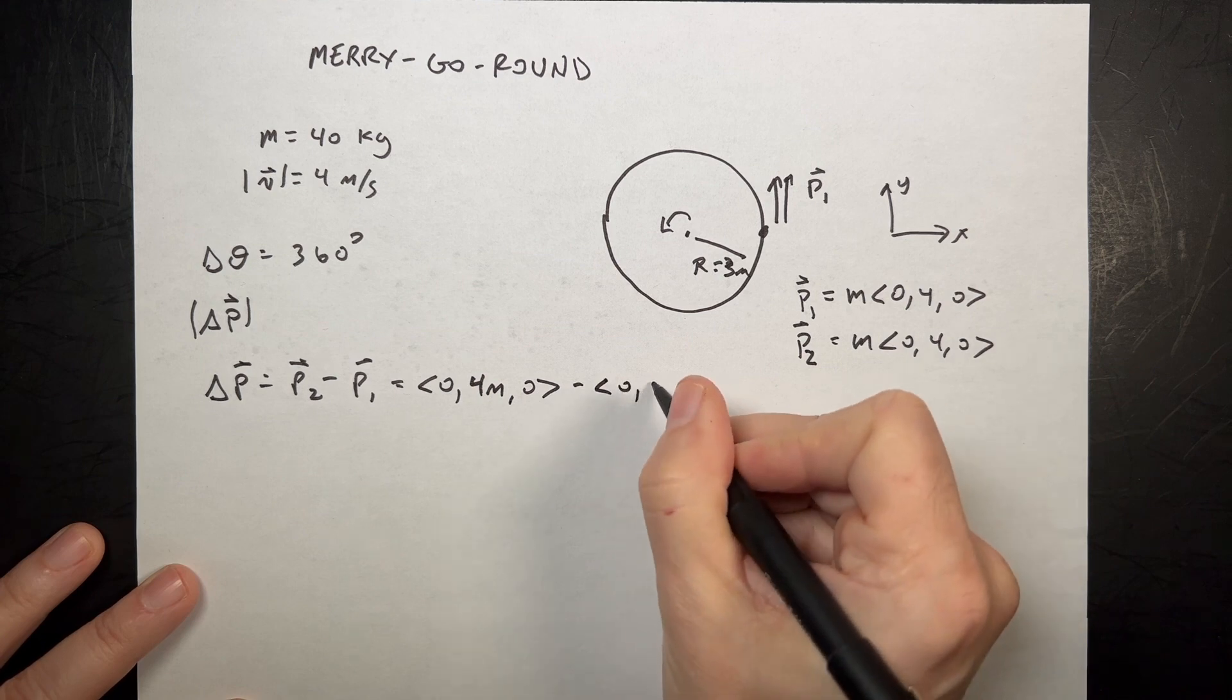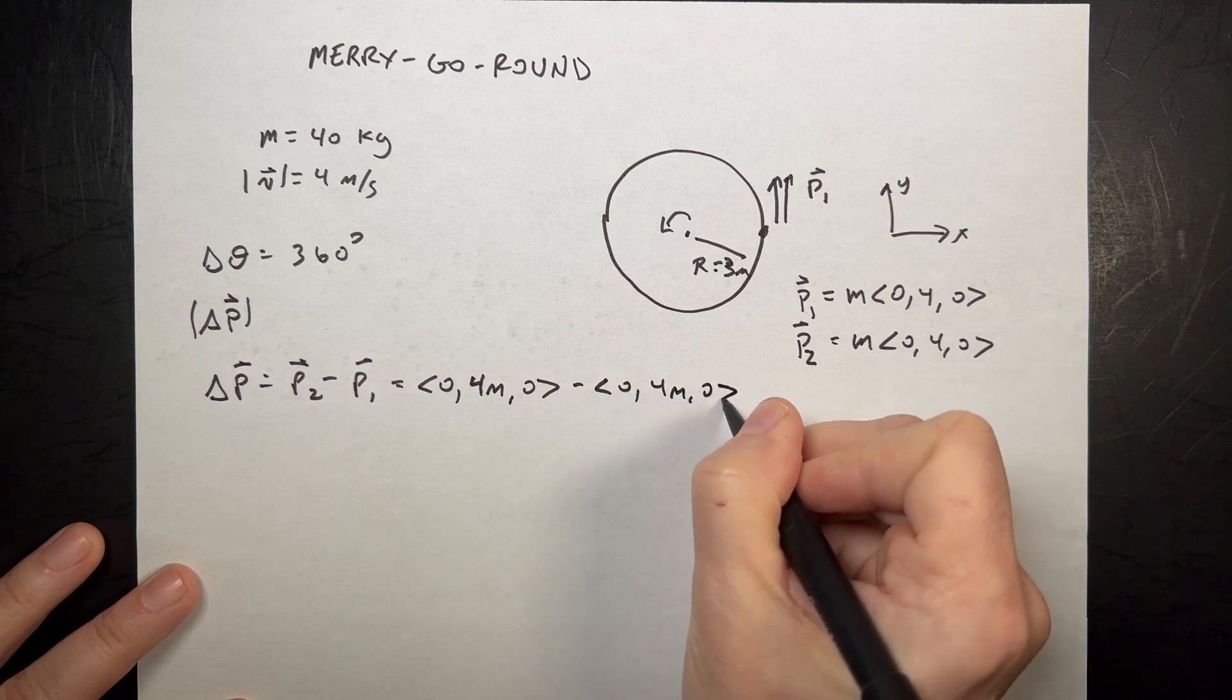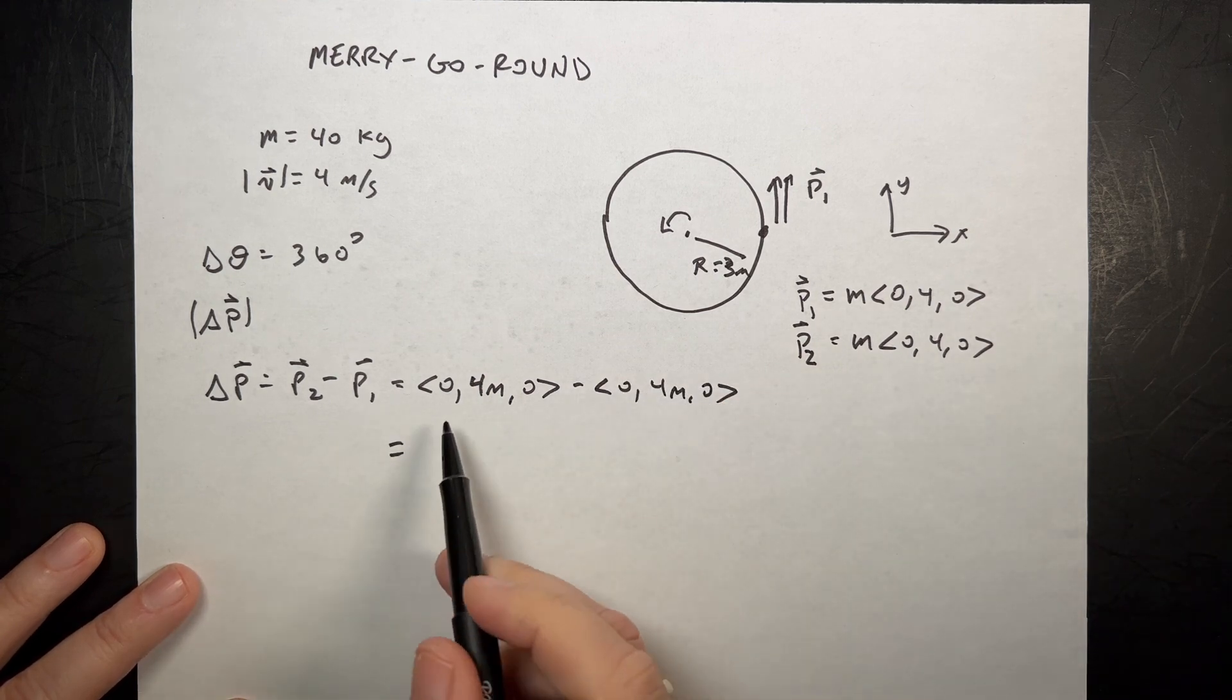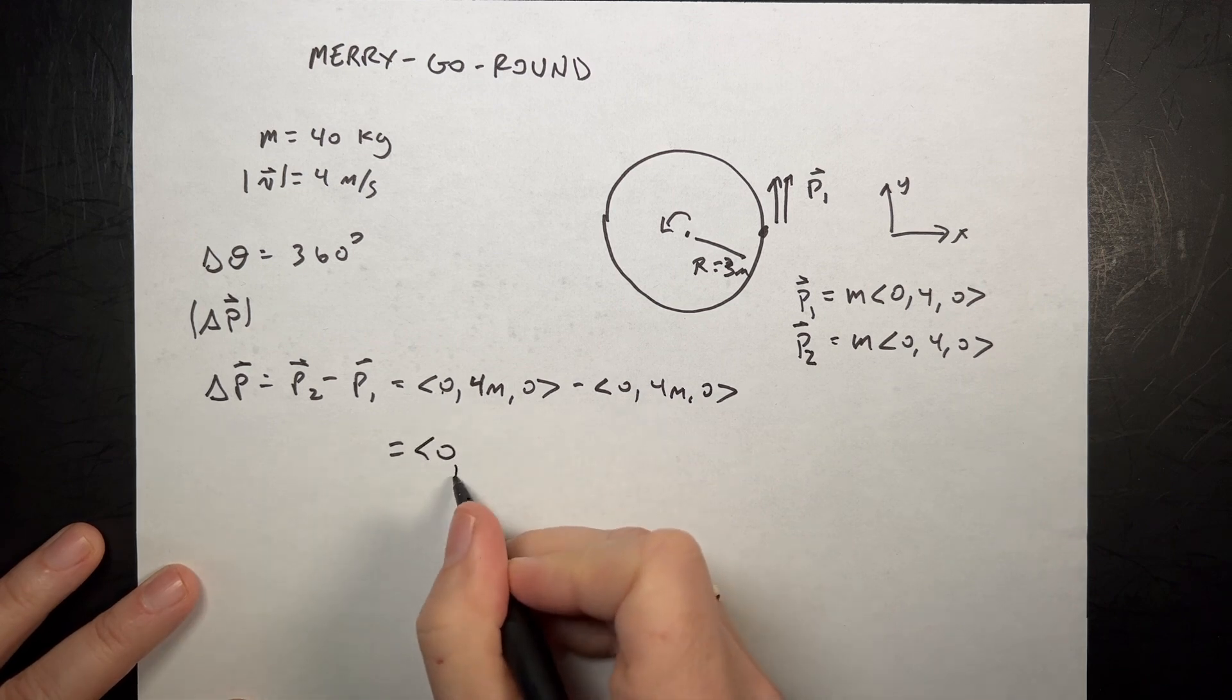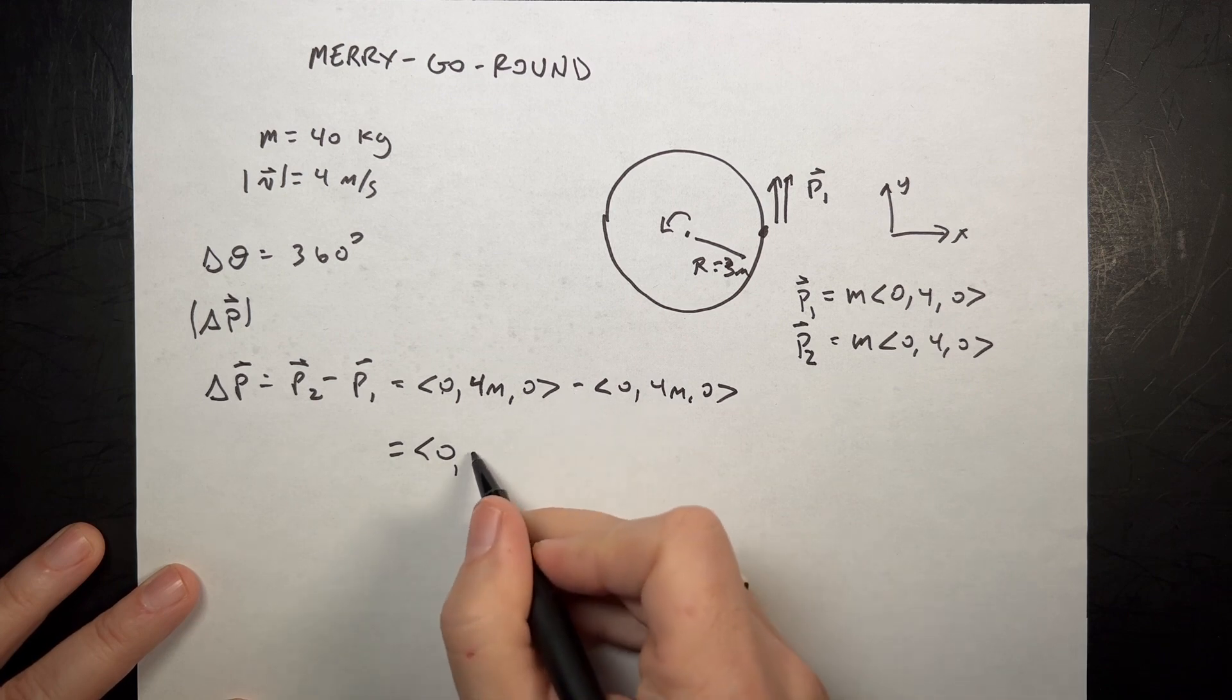Minus 0, 4M, 0. And so then if I do vector subtraction with components, it's 0 minus 0, 0. 4M minus 4M, 0. 0 minus 0, 0.